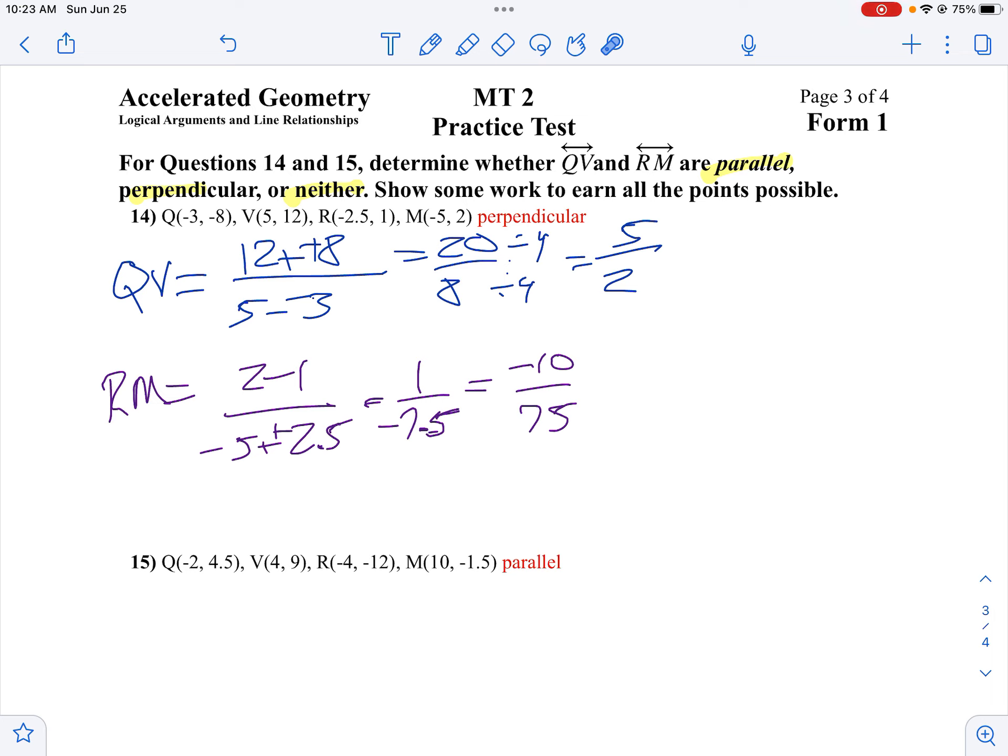And I just noticed I did that wrong, didn't I? Let's try that again. Negative 5 plus 2.5 is negative 2.5. So that should be negative 10 over 25.